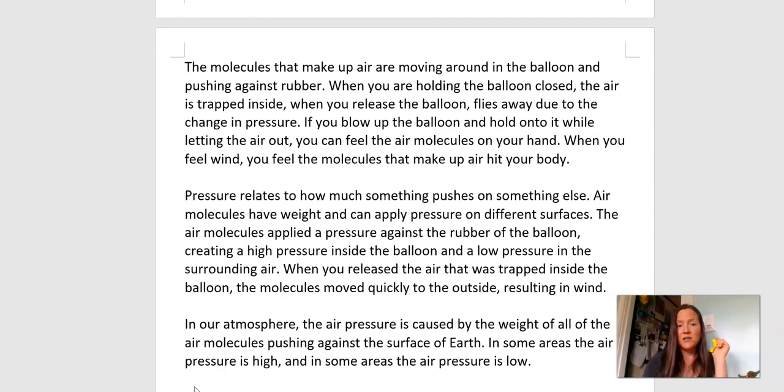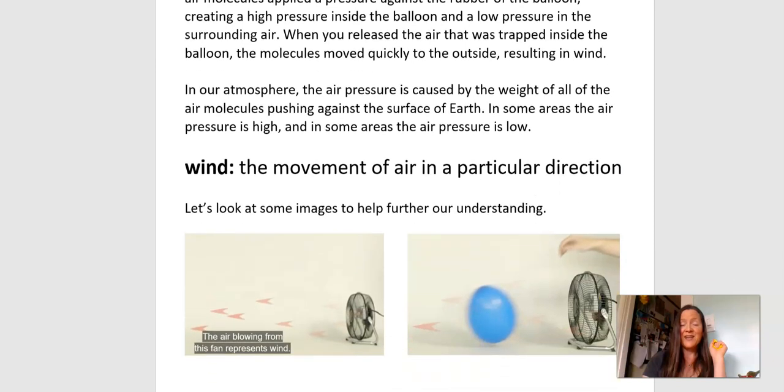So let's take a look at our packet and see what that says. Pressure relates to how much something pushes on something else. Air molecules have weight and can apply pressure on different surfaces. The air molecules apply pressure against the rubber of the balloon, creating high pressure inside the balloon and low pressure in the surrounding air. When you release the air that was trapped inside the balloon, the molecules moved quickly to the outside, resulting in the wind. So that was what I was feeling. The hole in the balloon allowed the air to escape from the higher pressure area to the lower pressure area. And I could feel those molecules. How does that relate to wind and our atmosphere? In our atmosphere, the air pressure is caused by the weight of all the air molecules pushing against the surface of the earth. In some areas, we have high pressure, and in some areas, we have low pressure. So that's going to relate to our air parcels and our surrounding air.